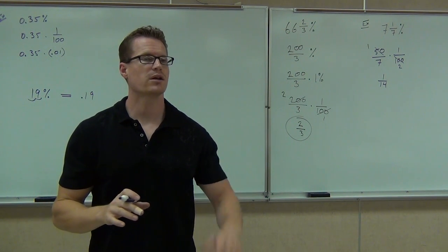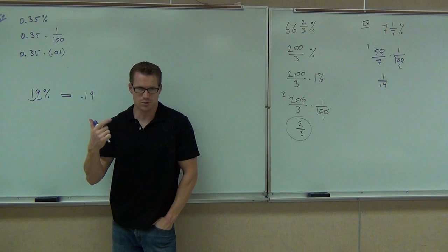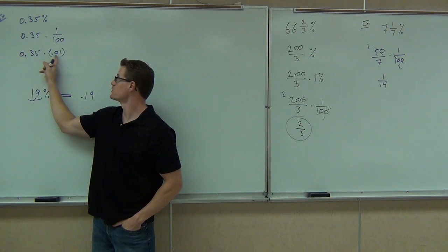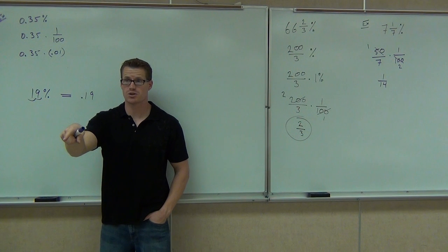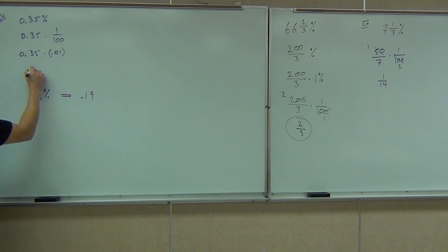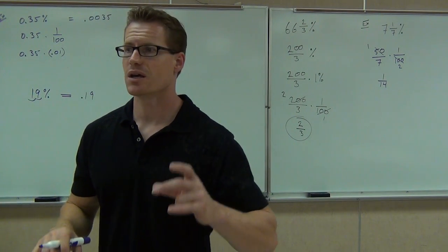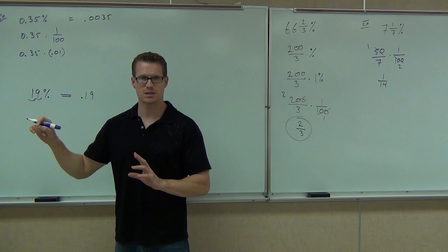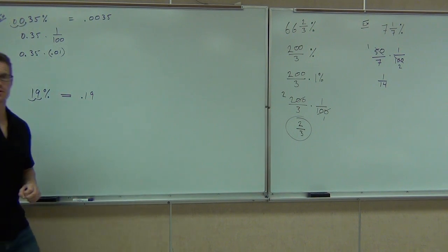1 over 100 is the same thing as 0.01. Do 0.35 times 0.01 on your calculator. What's 1 times 35? It's 35. How many decimal places do you have? Four. That means you're going to go past what you started with — it should be 0.0035. So to get 0.0035, if you're changing from a percent into a decimal, even if it already has a decimal, you move that decimal place two spots to the left. 0.35% → 0.0035.